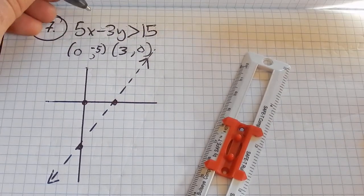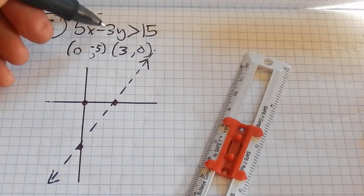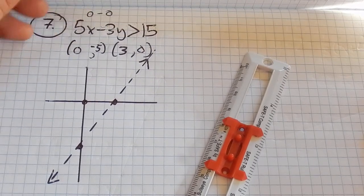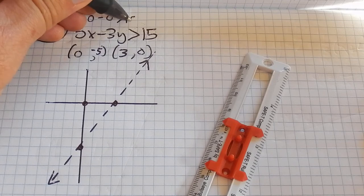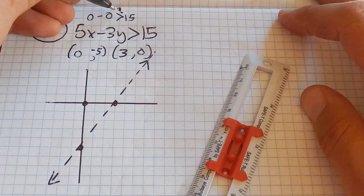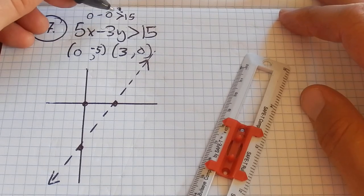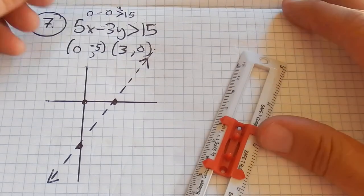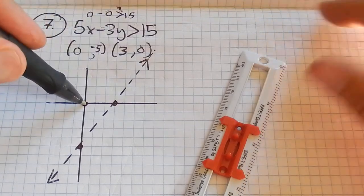I'm going to plug it in. So I plug in 0 for x, I get 0, 5 times 0. I plug in 0 for y, I get 0, 3 times 0. So the question I'm asking myself is, does 0 minus 0 equal something that's greater than 15? And it doesn't. 0 is not greater than 15. (0, 0) doesn't work.